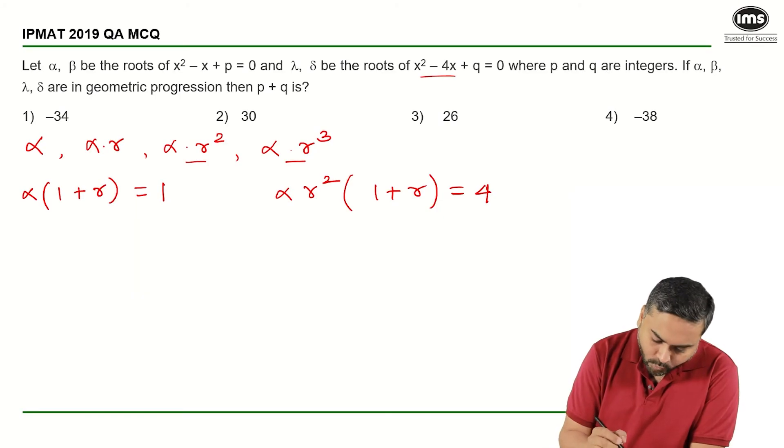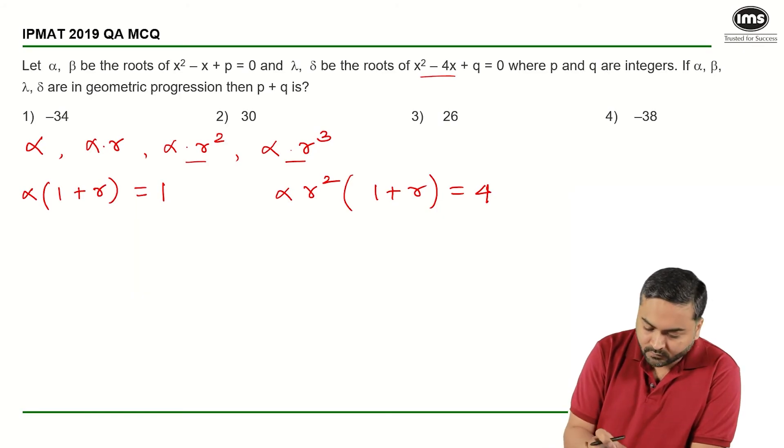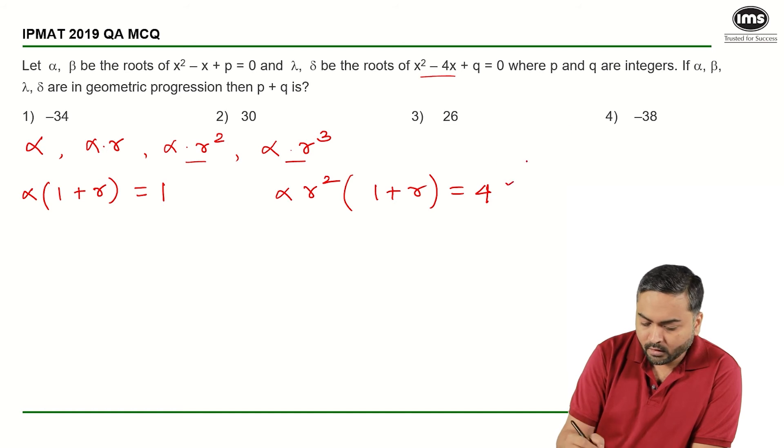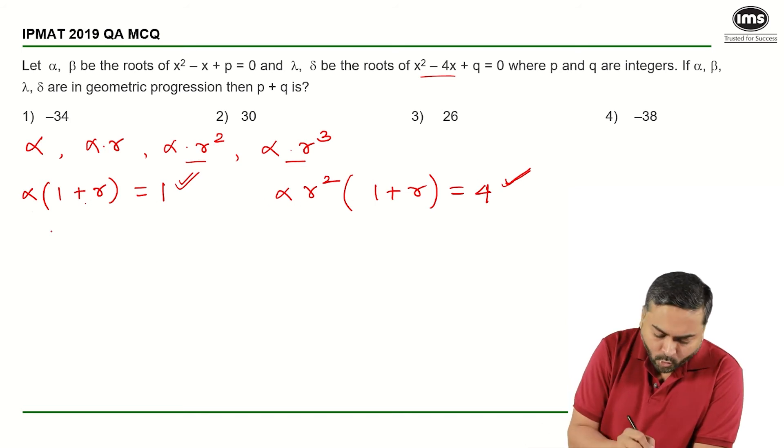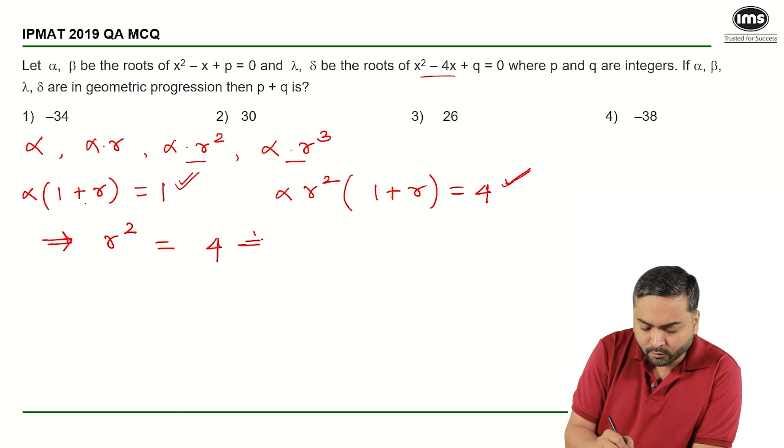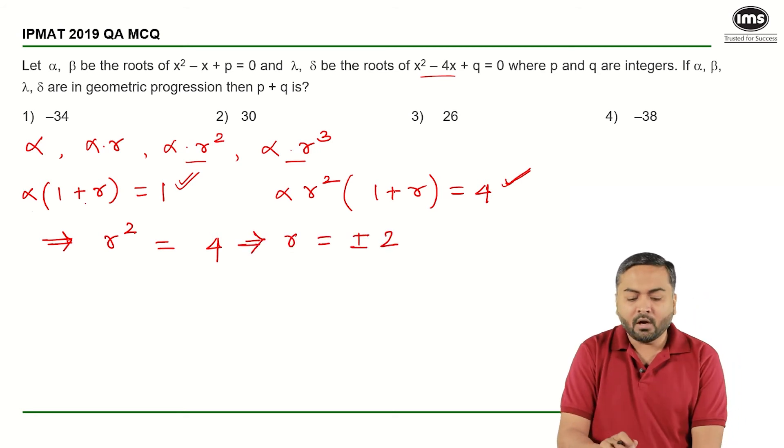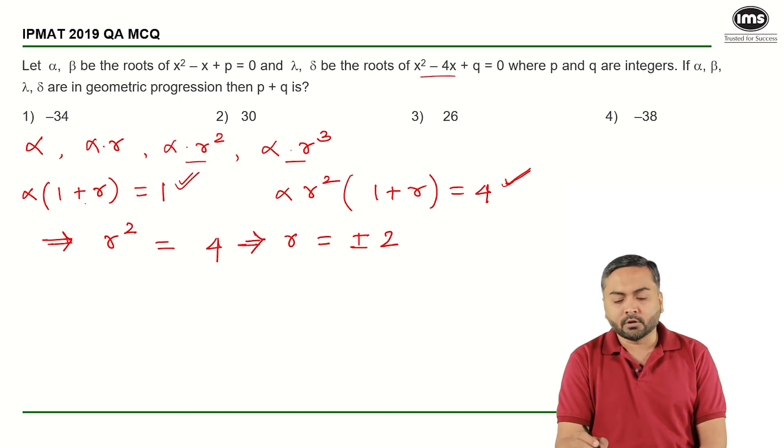Now I can divide this equation by this equation. 1 plus R, R and alpha will cancel out. I will be left with R square is equal to 4, and that gives me R is equal to plus or minus 2.